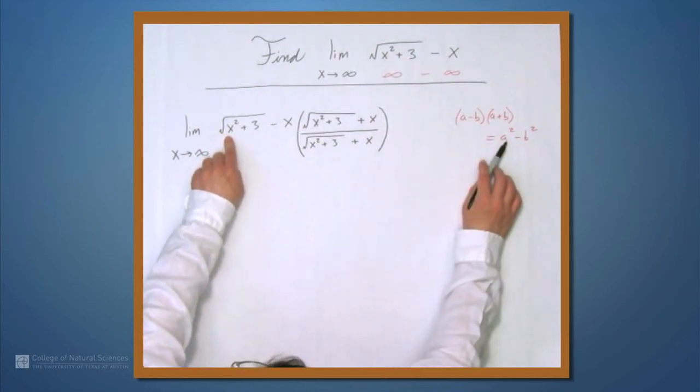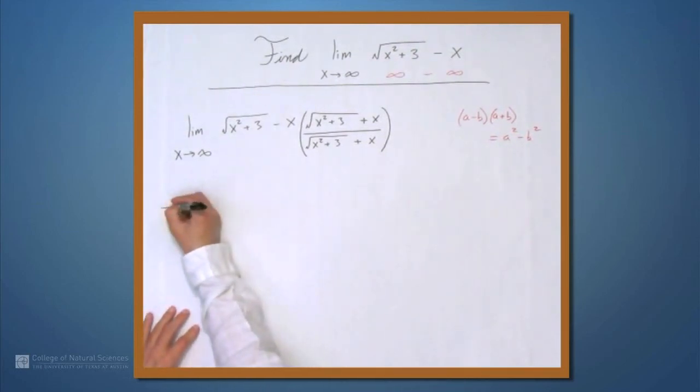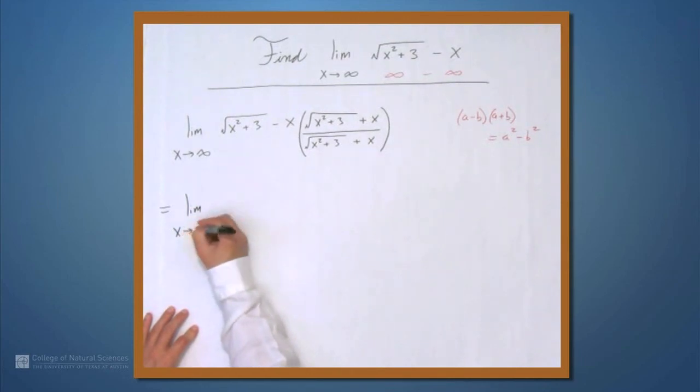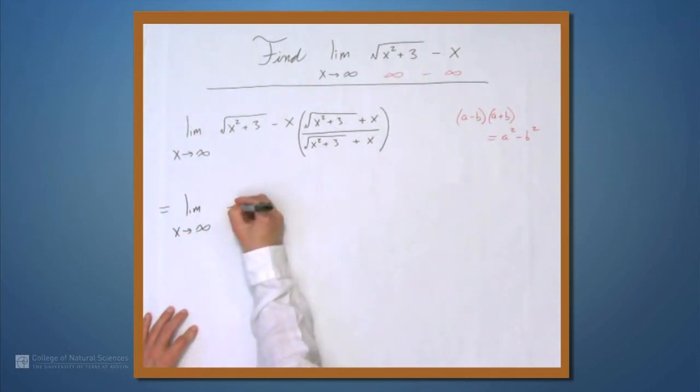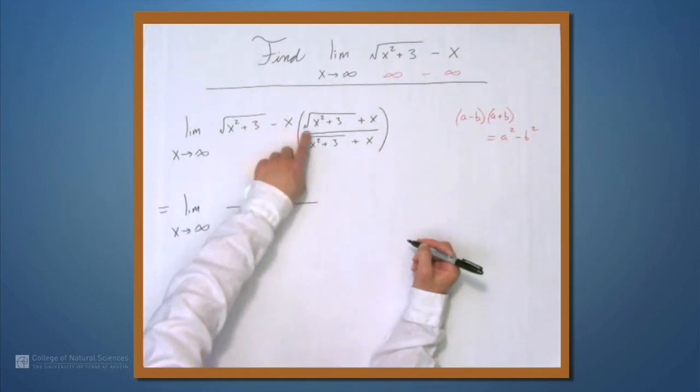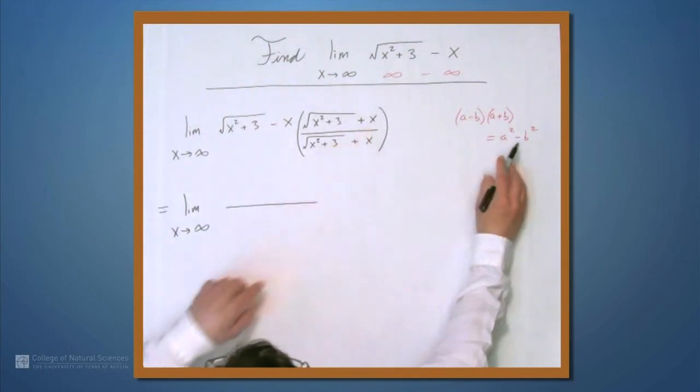This turns into the limit as x approaches infinity of a minus b times a plus b. That's this formula, so it's a squared minus b squared.